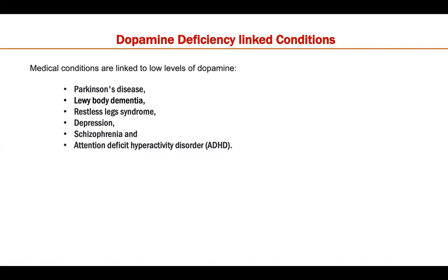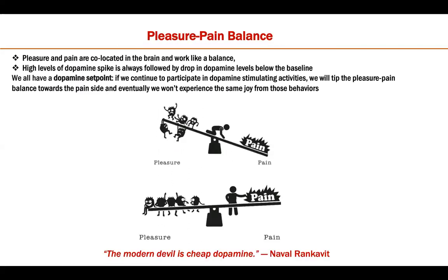Importantly, dopamine deficiency is linked to conditions such as Parkinson's, Lewy body dementia, restless leg syndrome, depression, schizophrenia, and attention deficit hyperactivity disorder — many disorders are linked with dopamine deficiency. But what happens when we disturb this dopamine balance? Dopamine works in a pleasure-pain balance system. Neurologically, pleasure and pain are processed in overlapping brain regions — a relatively new discovery — and they work in a seesaw mechanism.